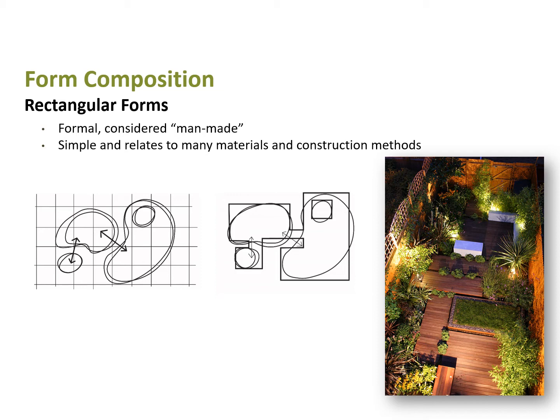The way you start applying forms to these bubbles to create interest is to draw an underlying grid. Here's a bubble diagram with a 90-degree grid underneath it; you then clip out spaces within this grid to create a rectangular design. Rectangular designs work with a lot of different materials — it's a man-made or geometric form, but it works well with decking, brick, or tile, which usually come in a square or rectangle pattern.